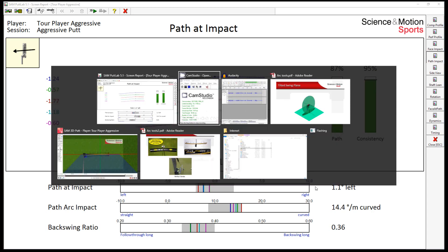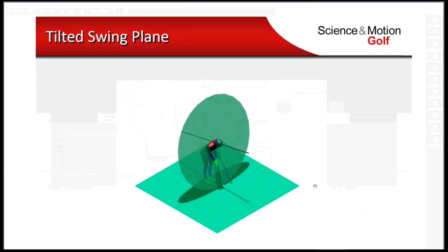If we look at it more precisely, we see that the putter is also moved inside of a tilted swing plane, and if you project this swing plane onto the ground we end up with an ellipse. This arc of the putter path also corresponds to this ellipse.